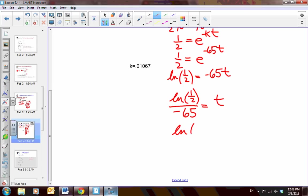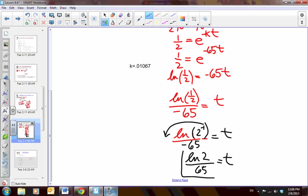We know that 1 half is 2 to the negative 1. It's 2 to the negative 1 over negative 65. And then we know with our rules of logarithms, when I have a negative exponent, that just means multiply it by negative. So, negative divided by negative is a positive. So, I end up with the natural log of 2 over 65. This is the amount of time it will take to get a half-life.